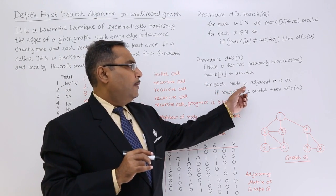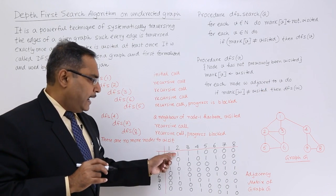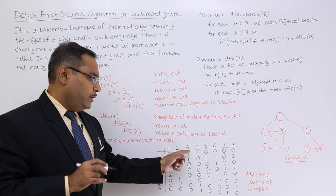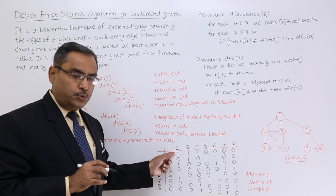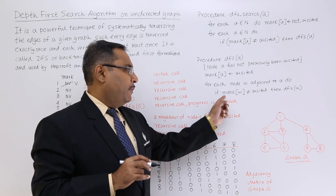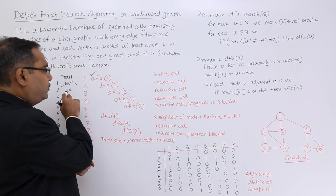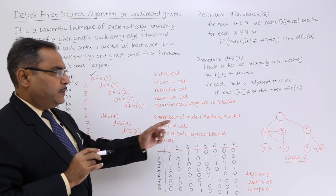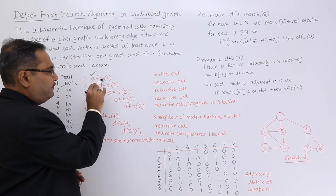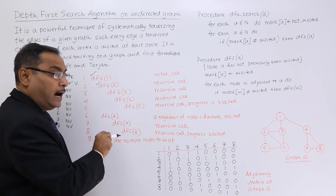Now for each node w adjacent to vertex 1: from the adjacency matrix, node 1's adjacent nodes are 2, 3, and 4. We consider node 2 first. Since mark of 2 is not equal to visited — it is not visited — we call DFS(w), meaning DFS(2).